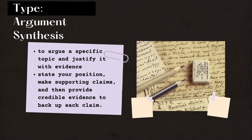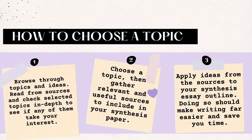Unlike the explanatory type, in argument synthesis you do the same thing you would do in a regular argumentative paper: state your position, make supporting claims, and then provide credible evidence to back up each claim. For example: 'Is COVID-19 the end of globalization?' or 'Globalization has bad effects on local products.'